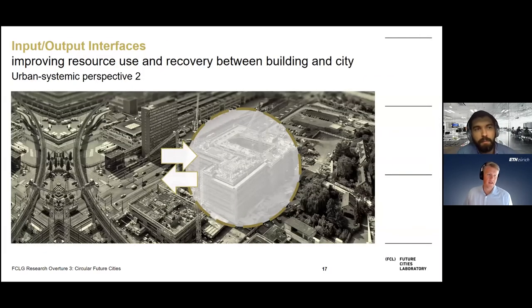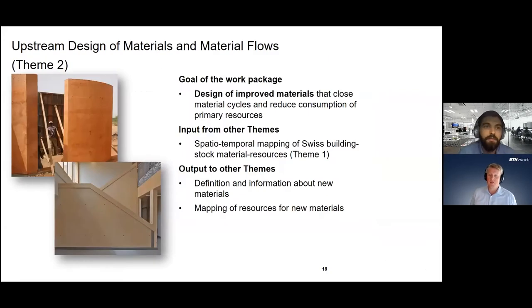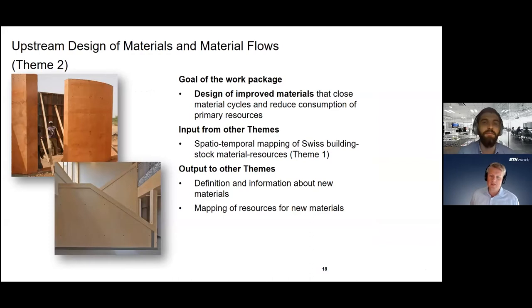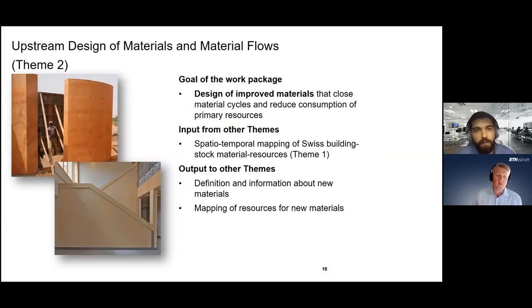Our second urban systemic perspective is about the input and output interfaces — understanding how to improve resource use and recovery between building and city. Theme 2 is led by Guillaume Hubert, and the goal is to focus on the design of improved materials: materials with less consumption of primary resources, closed material cycles, better forms of concrete with lower CO2 impact, and materials that can be reused and remanufactured more easily. The input to this theme is from the spatiotemporal mapping, and the output includes definitions and information about new materials and resource mapping.